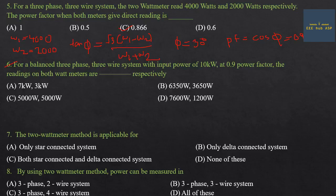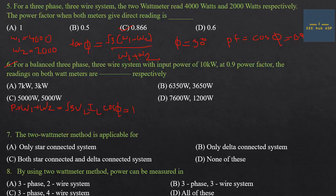Sixth question: For a balanced three-phase three-wire system with input power 10 kilowatts at 0.9 power factor, find the readings on both wattmeters. Total power W1 plus W2 equals 10,000 watts. Using P equals root 3 × V_L × I_L × cos φ, so V_L × I_L equals 10,000 divided by root 3 into 0.9.